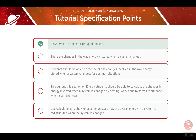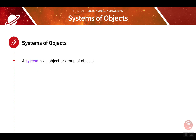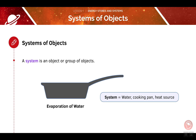We'll start off by looking at the definition of a system. In physics, we define a system as an object or group of objects. Whenever we talk about systems, we are simply referring to the objects that we are looking at. For example, we could look at the evaporation of water. In this system, there are various objects, including the water, the cooking pan, and the heat source.